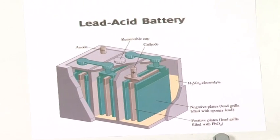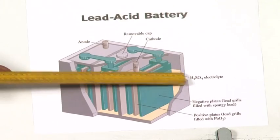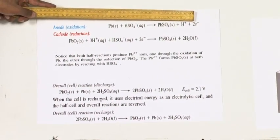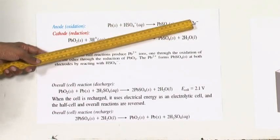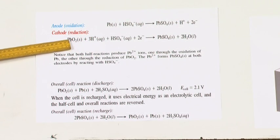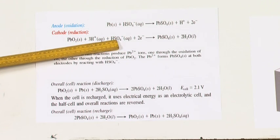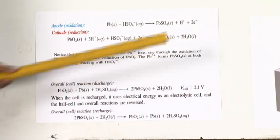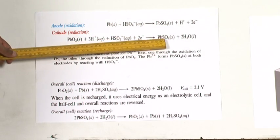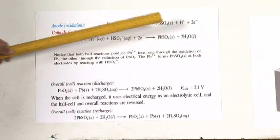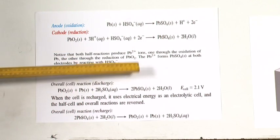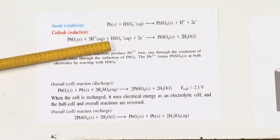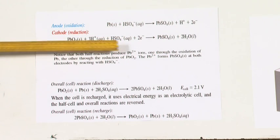In the lead acid battery, sulfuric acid is used as electrolyte. At the anode, lead solid reacts with HSO4⁻ to form lead sulfate (PbSO4) with removal of H+ and electrons — this is oxidation. At the cathode, PbO2 accepts electrons in the presence of HSO4⁻ and H+ to form PbSO4 and H2O — this is reduction. In both reactions, Pb2+ is produced and reacts with HSO4⁻.